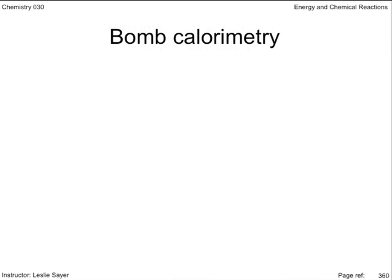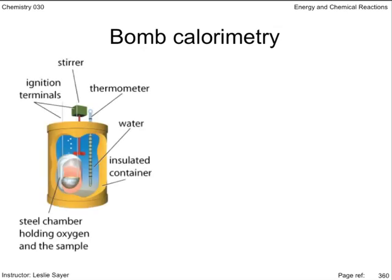For more precise measurements of combustion reactions, chemists use a special type of calorimeter called a bomb calorimeter. Reactants are ignited remotely in a reaction chamber filled with pure oxygen. The preciseness of the measurements relies on knowing the heat capacities of all the components. The manufacturer provides this information as a single heat capacity value that accounts for all components affected by temperature changes within.